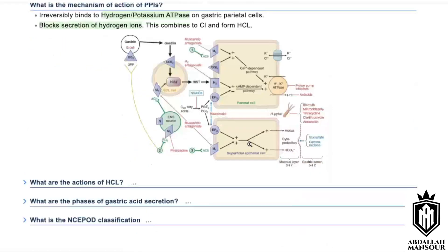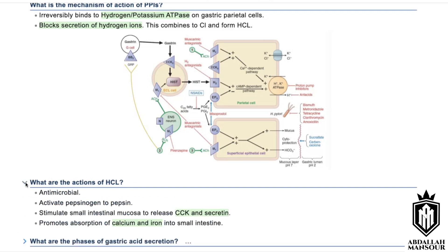What are the actions of HCl? HCl forms the acidic medium of the stomach, induces gastrin release, and has antimicrobial properties. It also activates pepsinogen to pepsin, stimulates the small intestinal mucosa to produce cholecystokinin and secretin, and promotes absorption of calcium and iron in the small intestine.